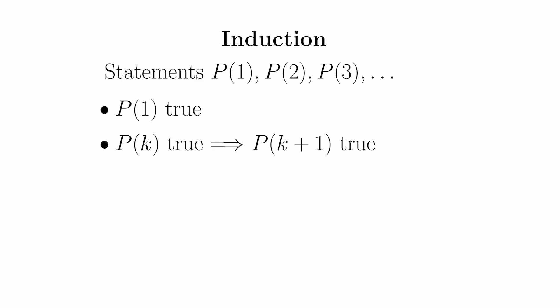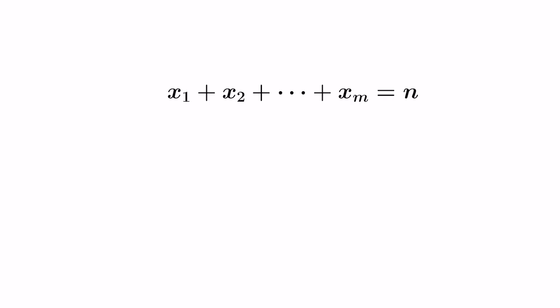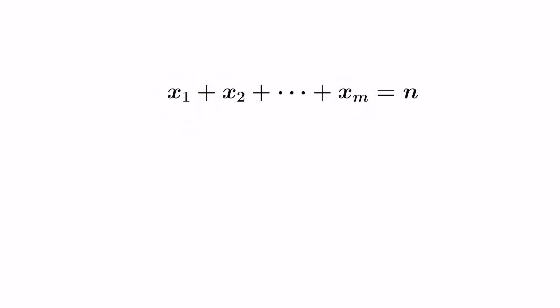This video is a continuation of our series on mathematical induction. Today we're going to prove an interesting type of induction — induction in two variables — and it's going to allow us to establish something done in combinatorics classes in a completely different way: determining the number of solutions to the equation x₁ + x₂ + ... + xₘ = n, where m and n are fixed positive integers and the variables take on non-negative integer values.